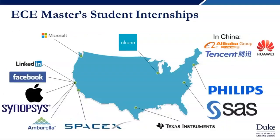This slide shows where students went for their internships. One key point is that they're really all across the country. Even though we're in Durham on the east coast, students are going to Silicon Valley — you can see on the west coast a lot of activity including LinkedIn, Facebook, Synopsys, Amborella, and Microsoft. Some students even went to China for their internships, based on where they found a good fit.